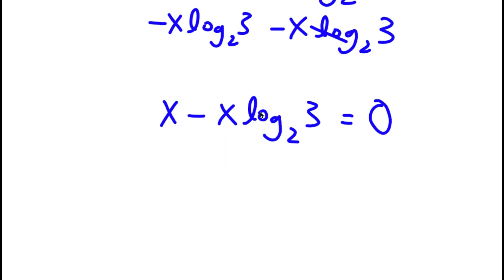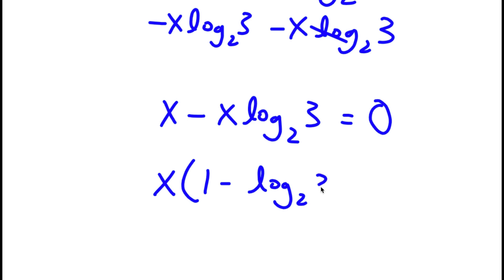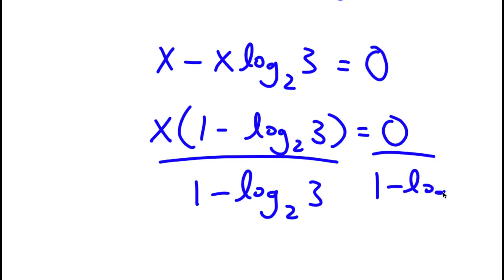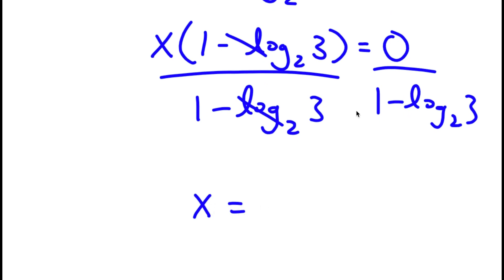So now I'm going to factor out x from the left hand side. I have x times (1 minus log base 2 of 3) is equal to 0. Now, if I divide both sides by (1 minus log base 2 of 3), these two cancel out and I'm left with x is equal to 0 divided by (1 minus log base 2 of 3), which is simply 0. So x is equal to 0.